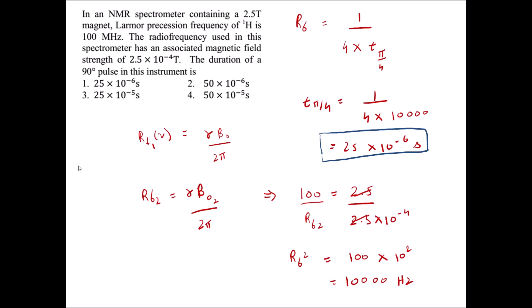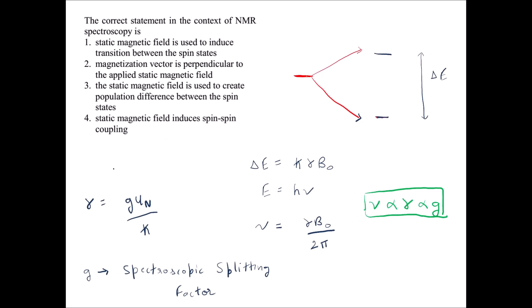I'll solve questions one by one, gradually increasing the level. The correct statement in the context of NMR spectroscopy — the first statement says static magnetic field is used to induce transition between the spin states. That is incorrect. It is actually the radio frequency that is responsible for inducing transition between spin states.